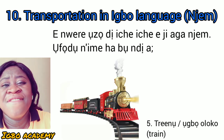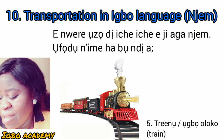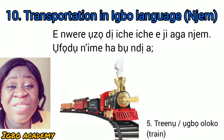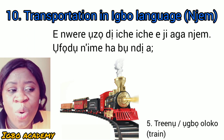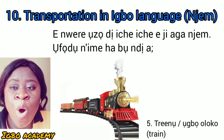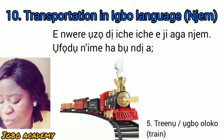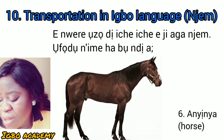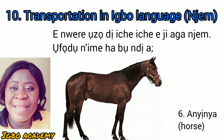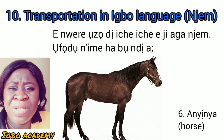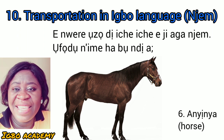Number five is the train, which is called Train or Uwooloko. Then number six is the horse, and the horse is called Aninya.